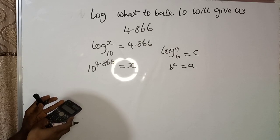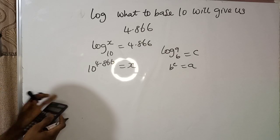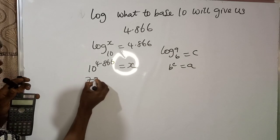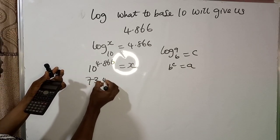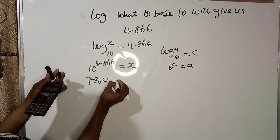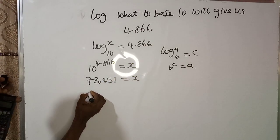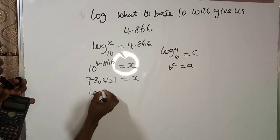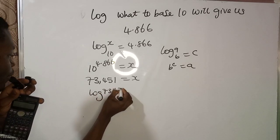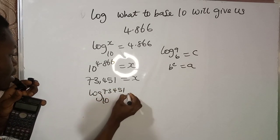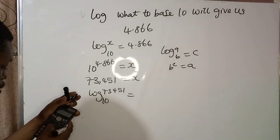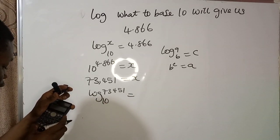10^4.866 is 73451. So x = 73451. Now let's check. We're going to have log₁₀(73451).